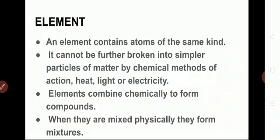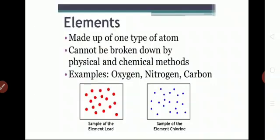First, what is an element? An element contains atoms of the same kind and it cannot be further broken down into simpler particles. In the picture, each red colored dot represents one single atom — there are 15 atoms, and all these atoms join together to form an element. Elements cannot be broken down by physical or chemical methods. Examples are oxygen, nitrogen, and carbon.